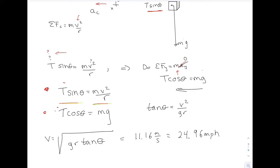Mathematically, it's the same thing. Dividing the two equations, the masses drop out and that gives you the speed. Then you convert that — I think the solutions had 24.67, and there might have been a seven there because maybe I used G = 9.81, which is fine. But with three sig figs, it's still 25.0 meters per second.